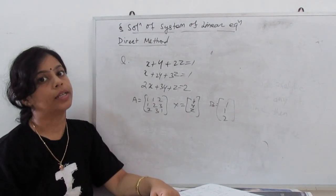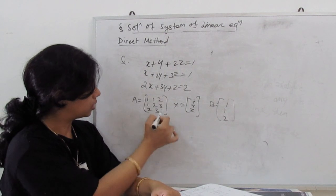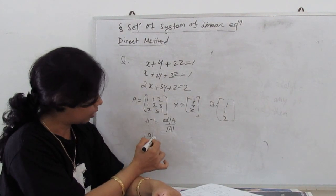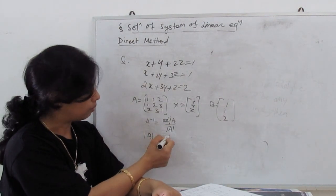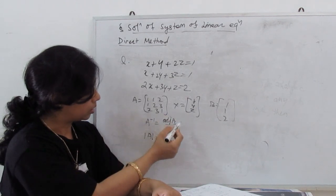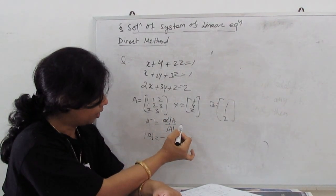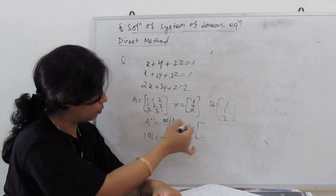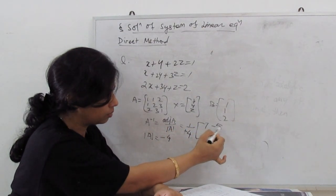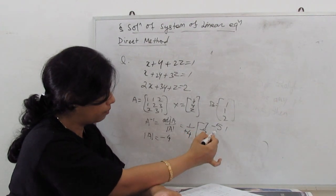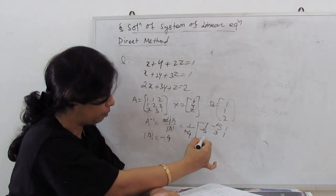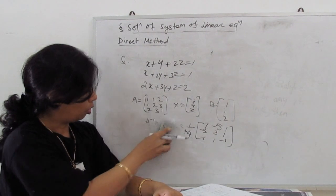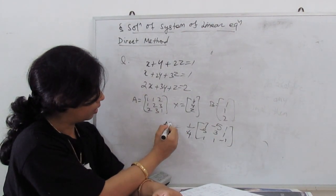The next step is to find A inverse. A inverse equals adjoint of A divided by determinant of A. The determinant of the given matrix A is minus 4, and the adjoint is computed. So A inverse equals 1 over minus 4 — or equivalently 1 over 4 with sign adjustments — giving the matrix with entries: minus 5, minus 5, minus 5, 1, minus 5, 3, 1, 1, minus 1. This is the A inverse of the given matrix A.